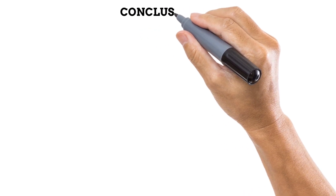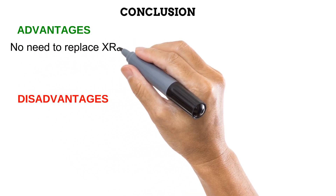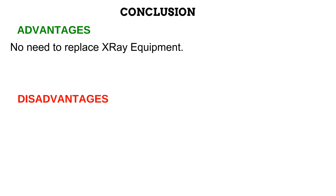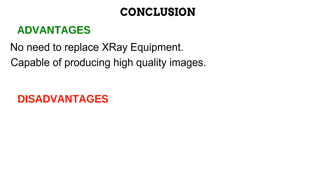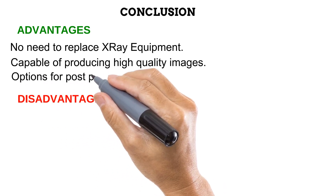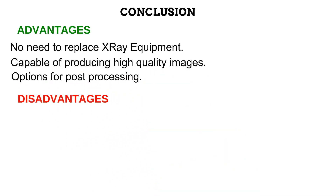Now that we have looked at how images are acquired in computed radiography, let us look at some advantages and disadvantages of this imaging system. As you may have noticed, there is no need to replace equipment like the x-ray tube, table, and bucky when an upgrade is being made from film screen to computed radiography, because the cassettes used in computed radiography are designed to fit into these equipment like film screen radiography cassettes. Secondly, computed radiography systems have an inherent ability to produce high-quality images. Also, computed radiography provides options for manipulating certain features of the image after it has been acquired, which helps to reduce the number of repeats that need to be made.